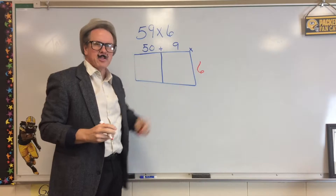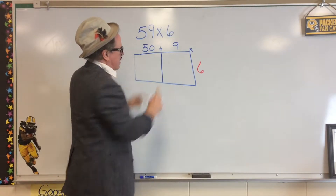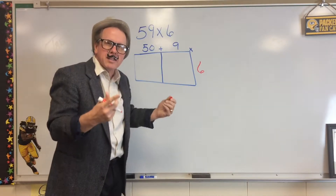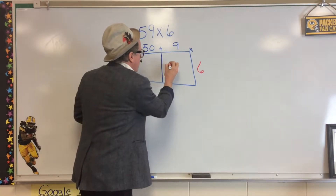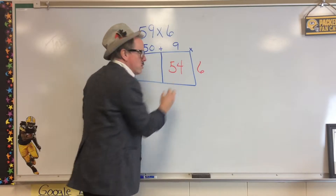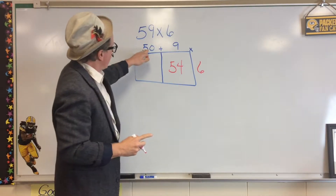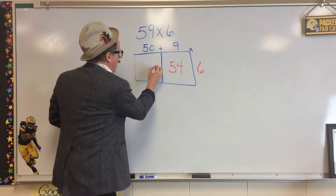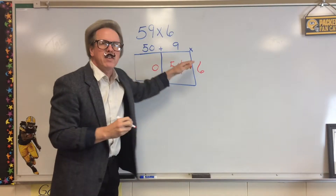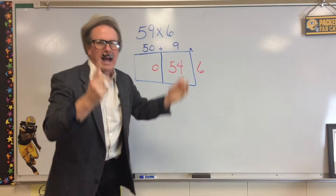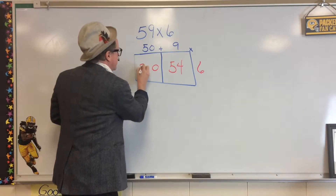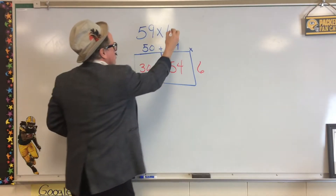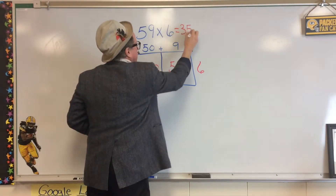We'll take 9 times 6 and put that right there. Now, 9 times 6 could be tough — you could break that down — but in this case, 9 times 6 is 54. I'll put that right there. Now, how many zeros are in this number? No zeros there, so we put that 1, 0 down, and now it is 5 times 6 — 30. So we have 300 plus 54. 59 times 6 equals 354.